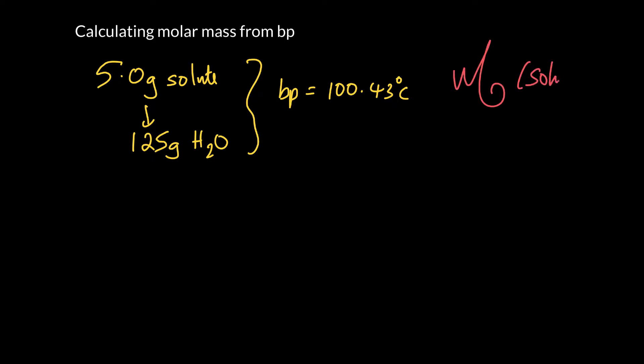So it doesn't seem like we know how to do it, but in actual fact we can. So how would we go about doing something like this? I guess we would probably start by just writing down the equations that we know. So we know that the boiling point elevation is equal to Kb times the molar concentration.